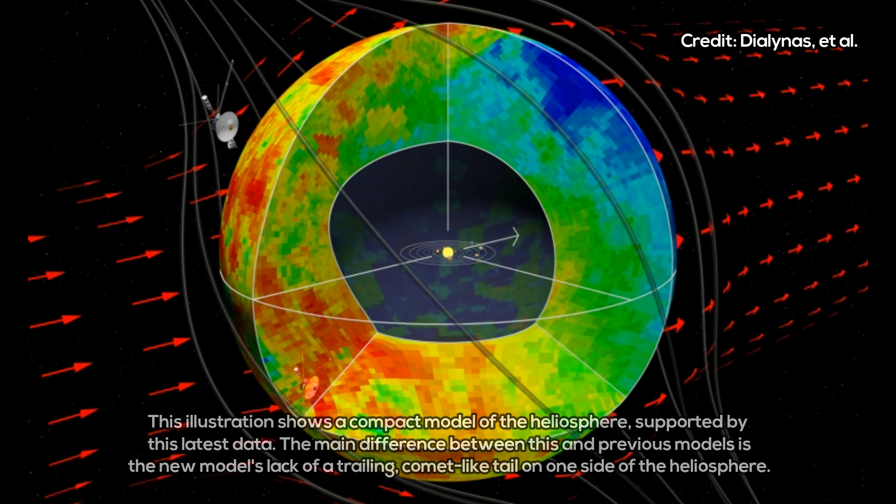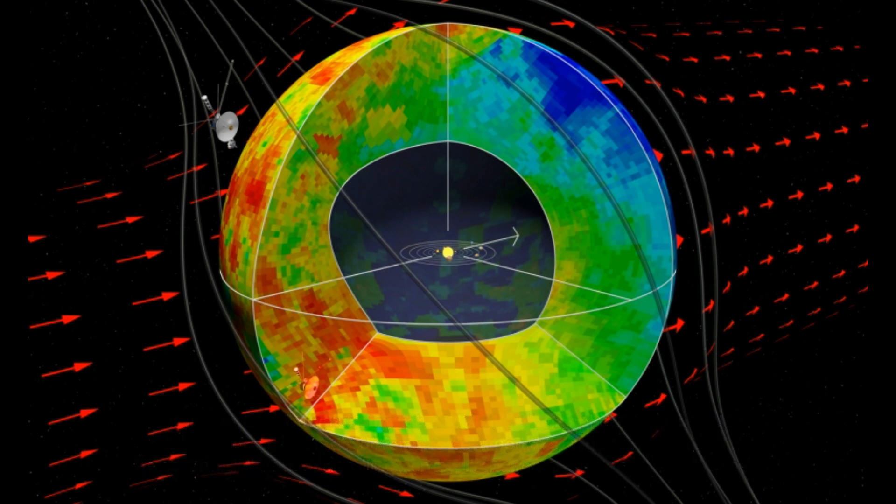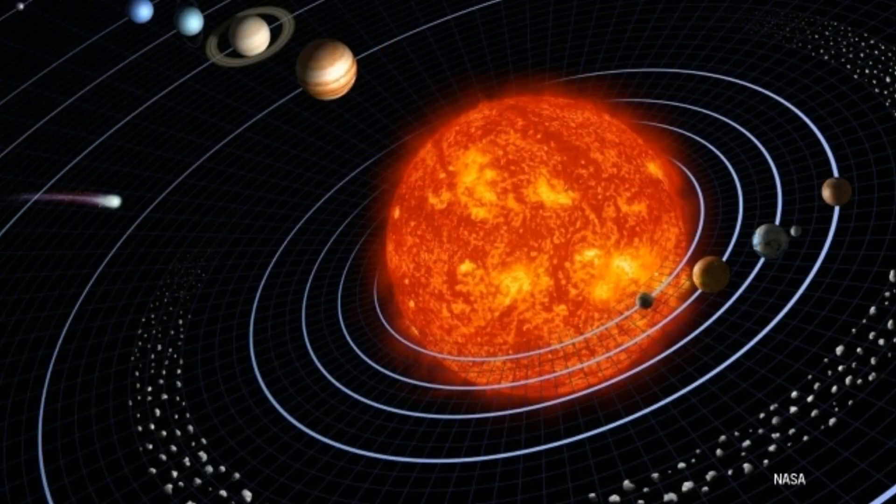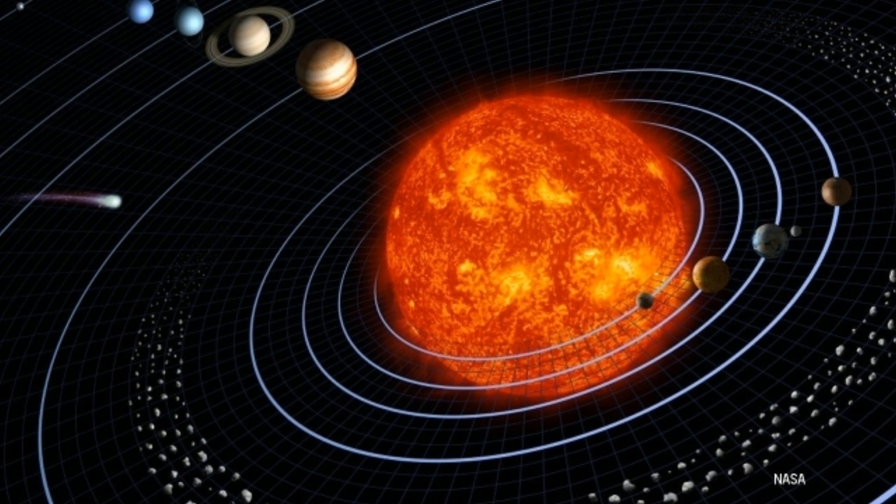We never thought that we would see what we're seeing and be able to image the boundaries of the heliosphere. Because these particles move at a small fraction of the speed of light, their journeys from the sun to the edge of the heliosphere and back again take years.